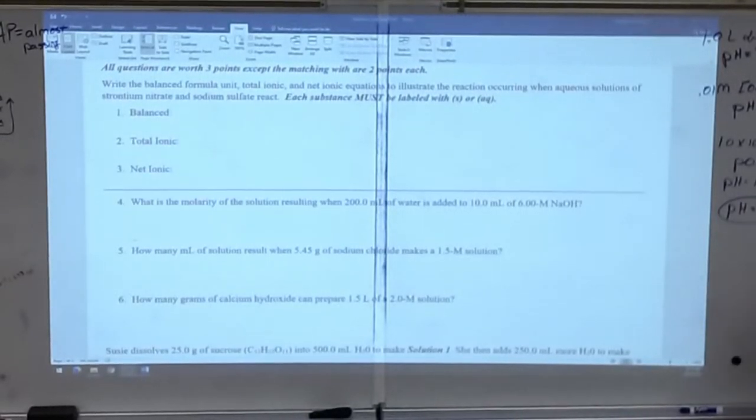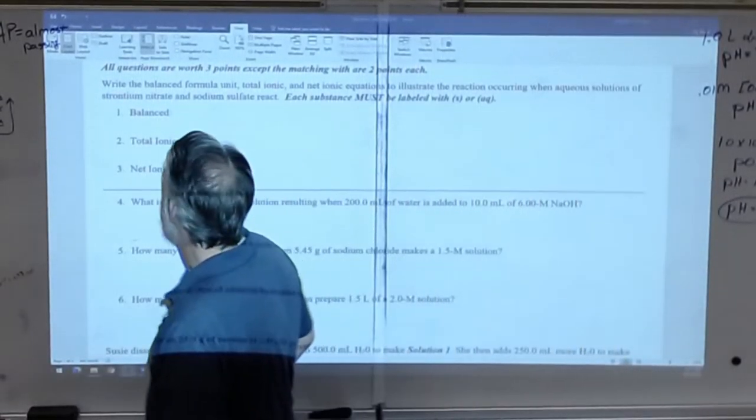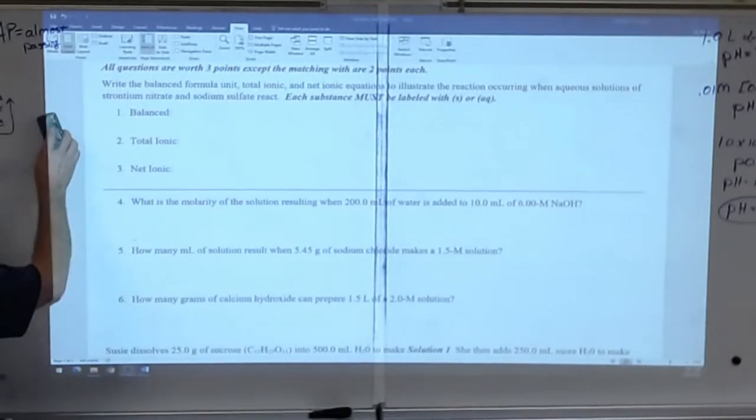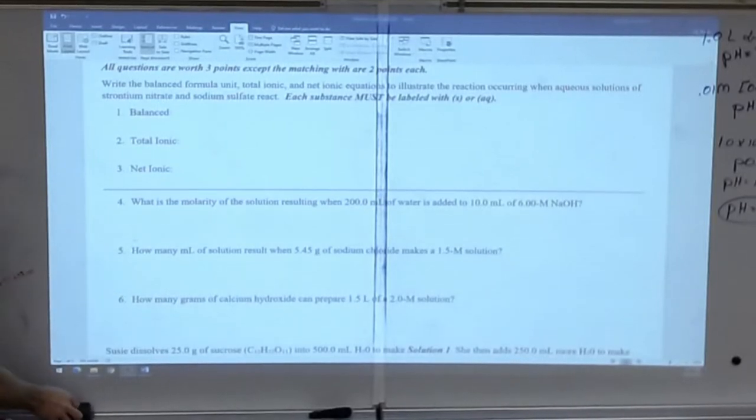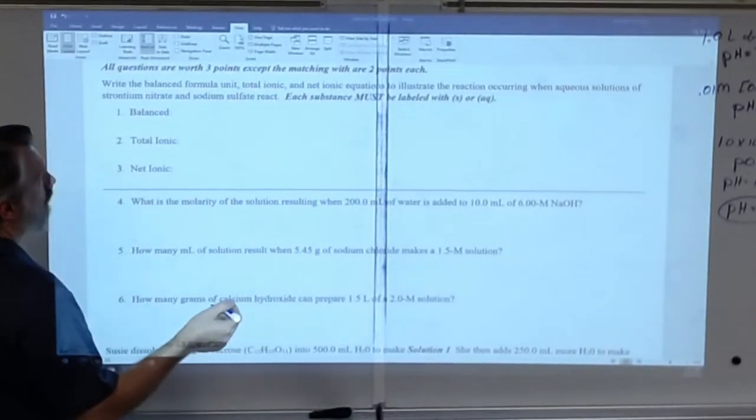All right, so now we're ready to go ahead and grade this. All questions are worth three points except for the matching, which are two points each. I want you to write the balanced formula unit, the total ionic and net ionic to illustrate the reaction when aqueous solutions of strontium nitrate and sodium sulfate react. All right, so first of all, let's go ahead and get our formulas written.